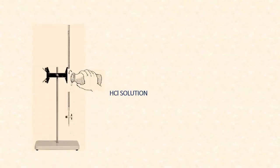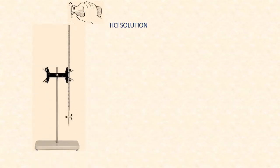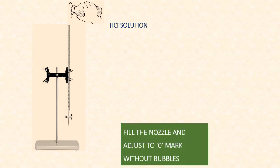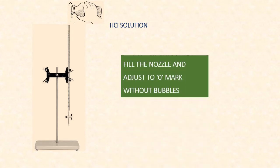Fill the burette with HCl solution, fill the nozzle, and adjust to zero mark without bubbles.